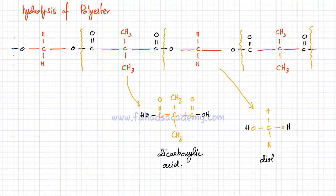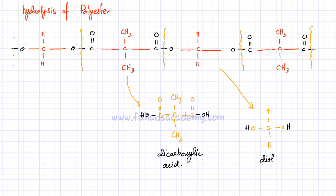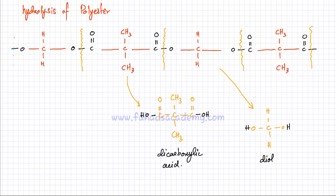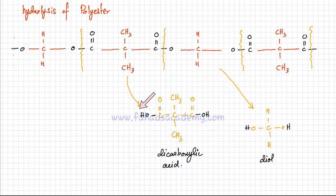So if you have a polyester molecule and want to figure out the two monomers, you search for all the ester links and break them into two parts. Once broken, if there's a C double bond O, add an OH next to it to form a carboxylic acid. If there's a single bond O on both sides, add an H only — that makes it into a diol. These two are your monomers making up the polyester chain.